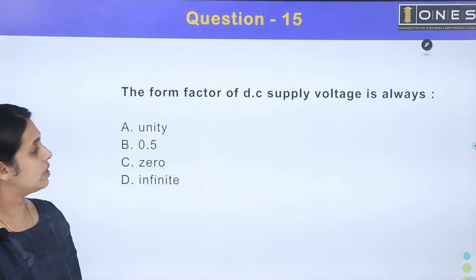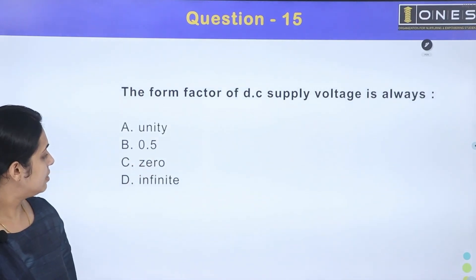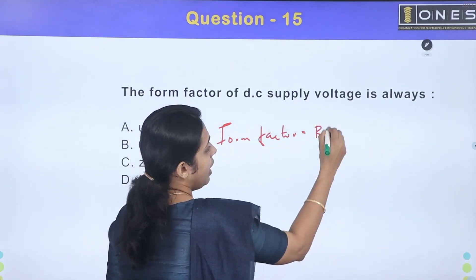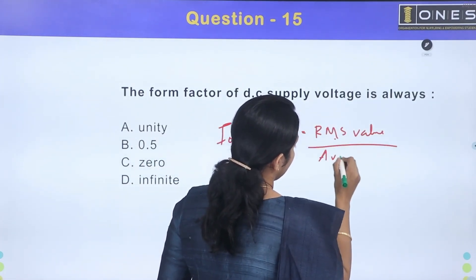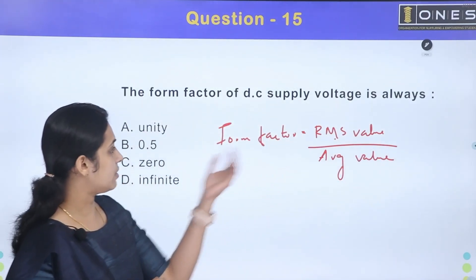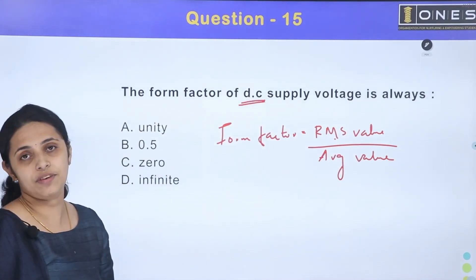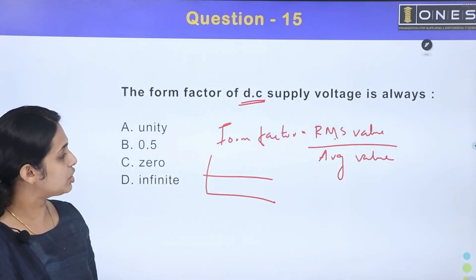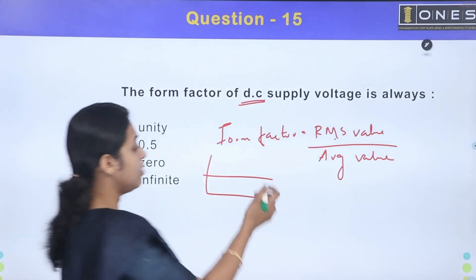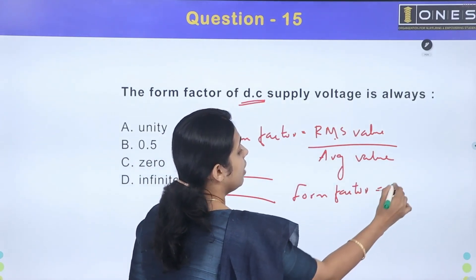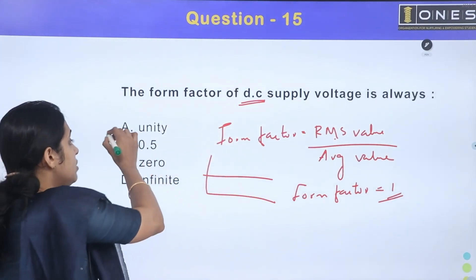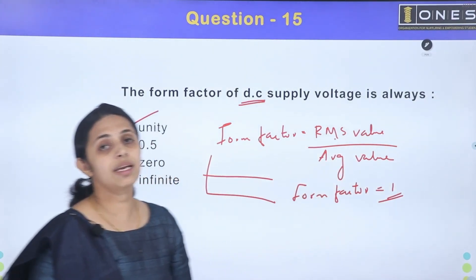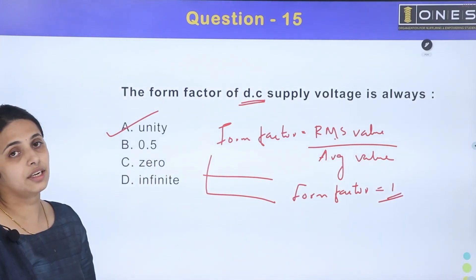The form factor of DC supply voltage is always what? Options: unity, 0.5, 0, infinity. The form factor equals RMS value divided by average value. For a DC supply, there is constant magnitude with no variation, so the RMS value and the average value are the same. Therefore, the form factor is always unity.